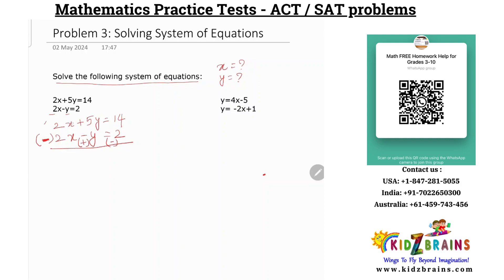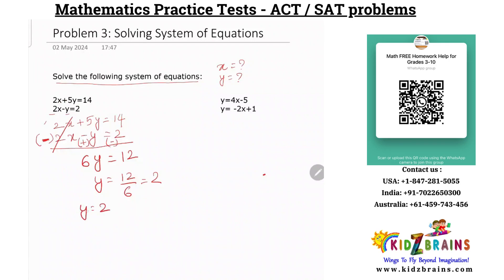Now I add both equations: 2x minus 2x cancels out. Then 5y plus y becomes 6y, and 14 minus 2 is 12. So 6y equals 12, which means y is 12 divided by 6, which is 2. So y is 2.